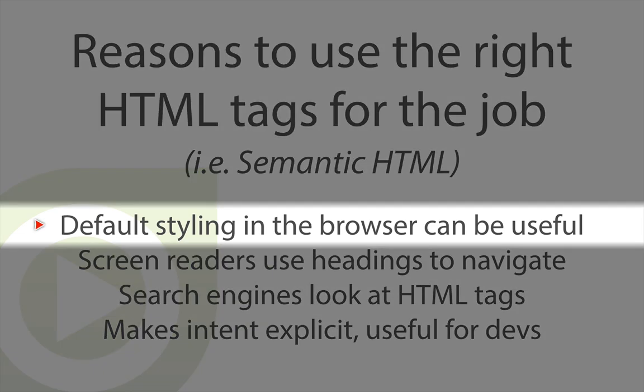The first reason, which isn't tied in with meaning directly, but which can give visual meaning to different elements on a page, is that the default styling in a browser can be useful. For example, if we didn't add any styling to the example that we're working with, the browser would give the heading tag a much greater weight on the page, and that gives the necessary visual cues to know that it's a heading. Also, a lot of the times we'll actually want that heading to be bold, we'll want it to have a certain margin, and so it can save us time when writing CSS.